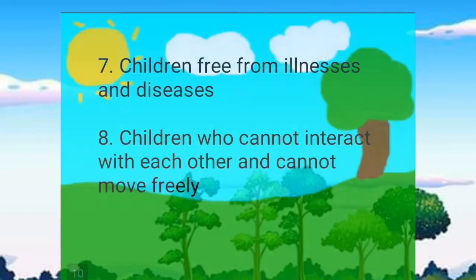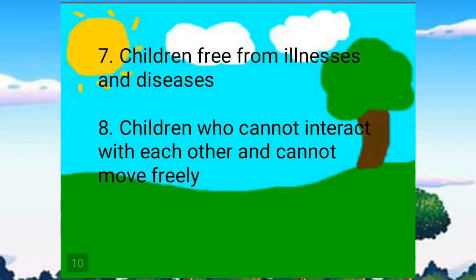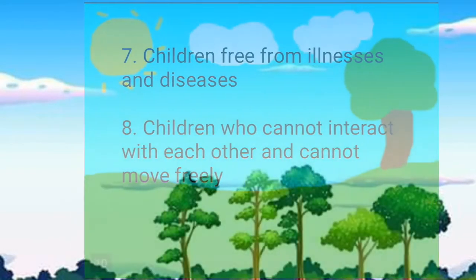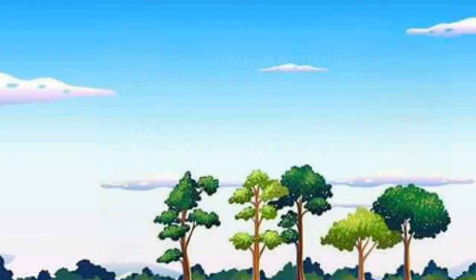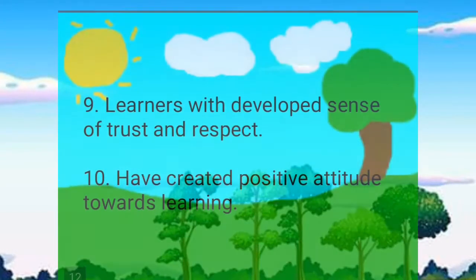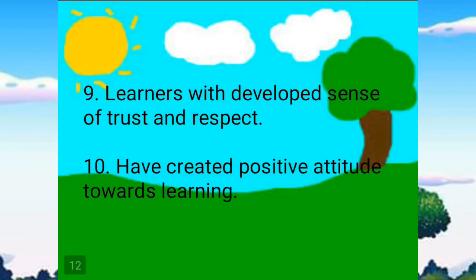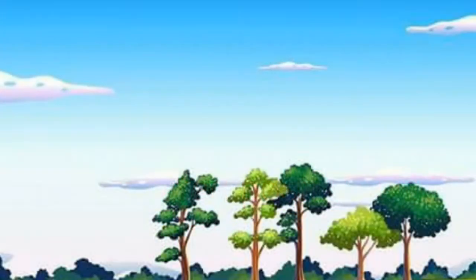Number 6: children playing safely and without injury. Number 7: children free from illnesses and diseases. Number 8: children who cannot interact with each other and cannot move freely. Number 9: learners with developed sense of trust and respect. And number 10: have created positive attitude towards learning.